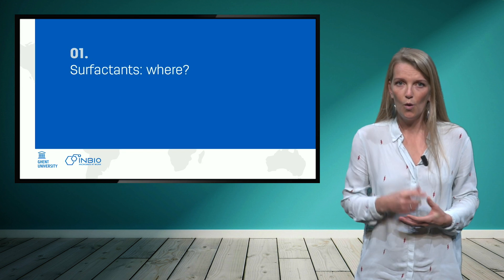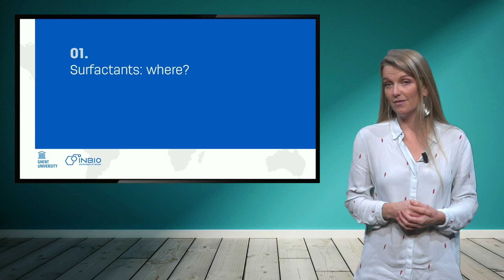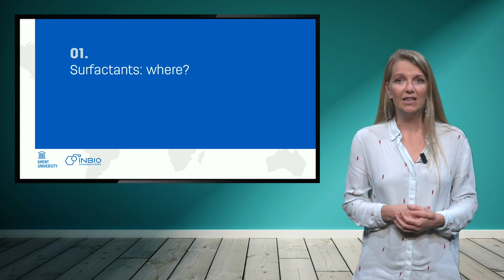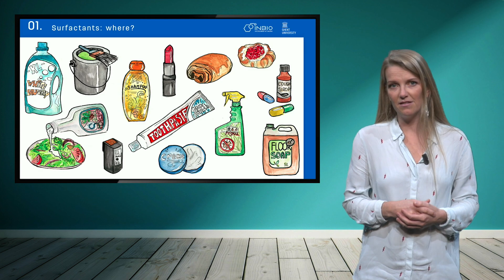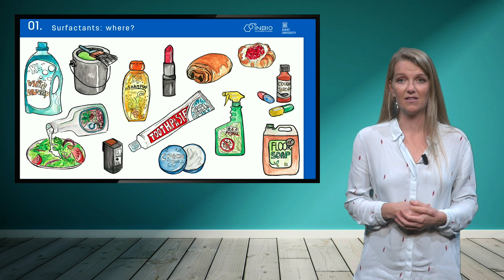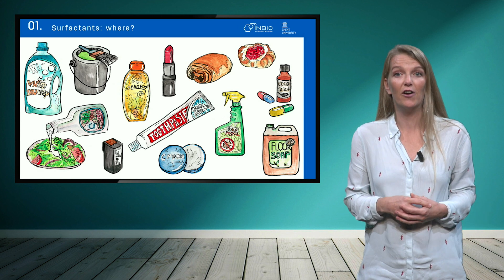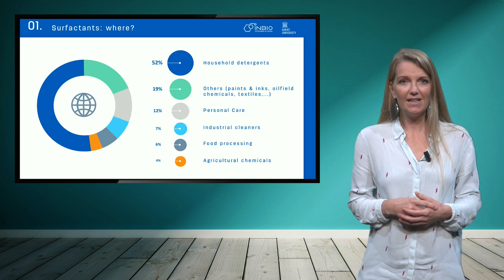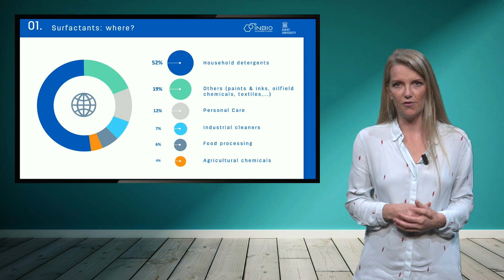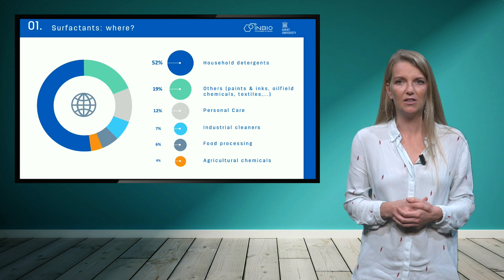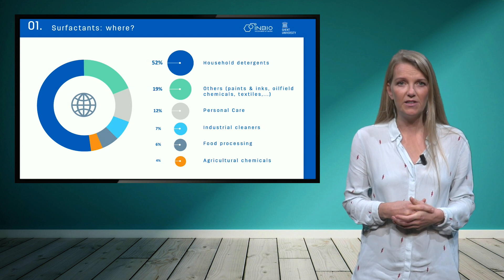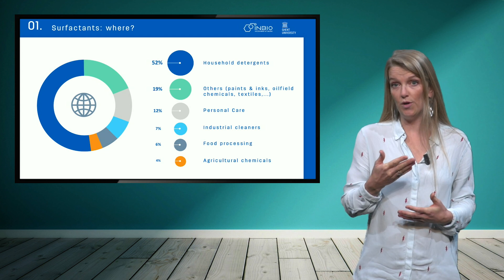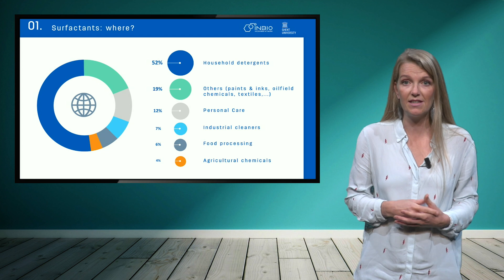Now, first things first — where do you think surfactants are actually applied? You might have never heard the word surfactant, but actually you have used or even eaten several products today that contain surfactants, as they are an active ingredient in a very broad range of products we use in our daily lives. If we take a look at the global market of surfactants, which corresponds to about 20 million tons in total, you can see that a very big part is the use in so-called household detergents — the products you and I use to clean, wash the dishes, etc.